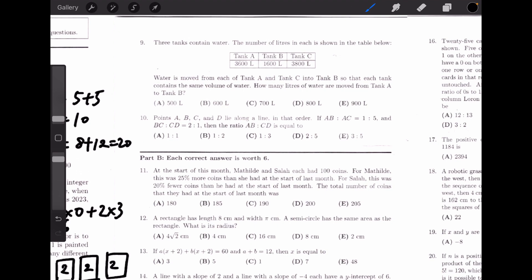Question 9. Three tanks contain water. The number of liters in each is shown in the table. Water is moved from tank A and tank C into tank B so that each tank contains the same volume of water. How many liters of water are moved from tank A to tank B? Because each tank should contain the same volume of water at the end, we calculate the average amount of water in each tank.